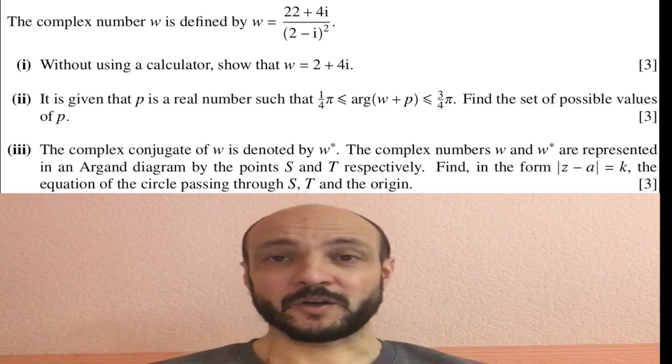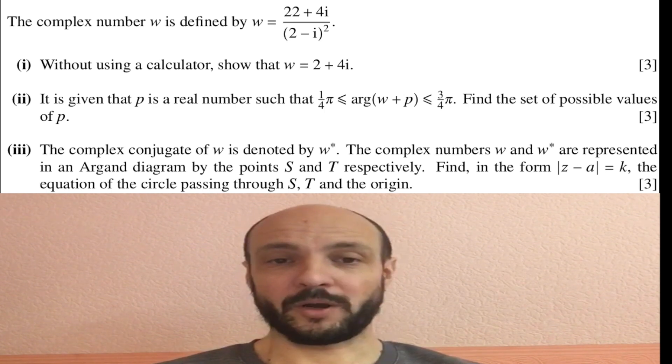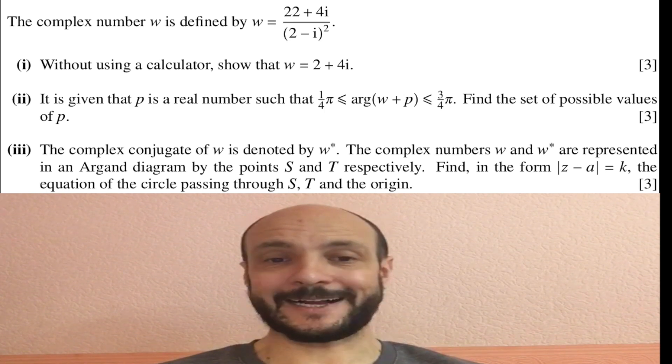So to start with I'm going to read out the question carefully and then we'll look at the solutions to each part of it. The complex number w is defined by w equals 22 plus 4i over 2 minus i squared. Part one: Without using a calculator show that w equals 2 plus 4i.